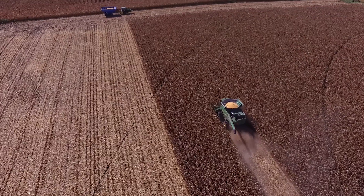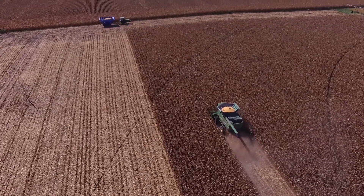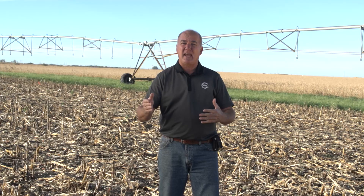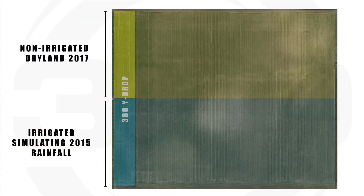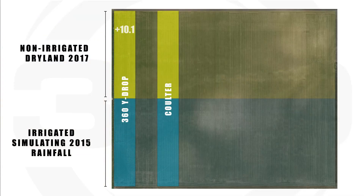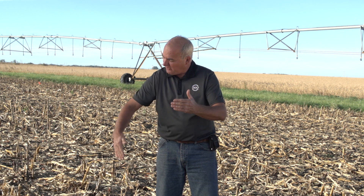As we harvest this plot, we learned a lot. For example, where we had Y-Drop side by side with the coulter, we showed a 10.1-bushel response to the Y-Drop — nitrogen on top right next to the base of the plant compared to the center of the row.